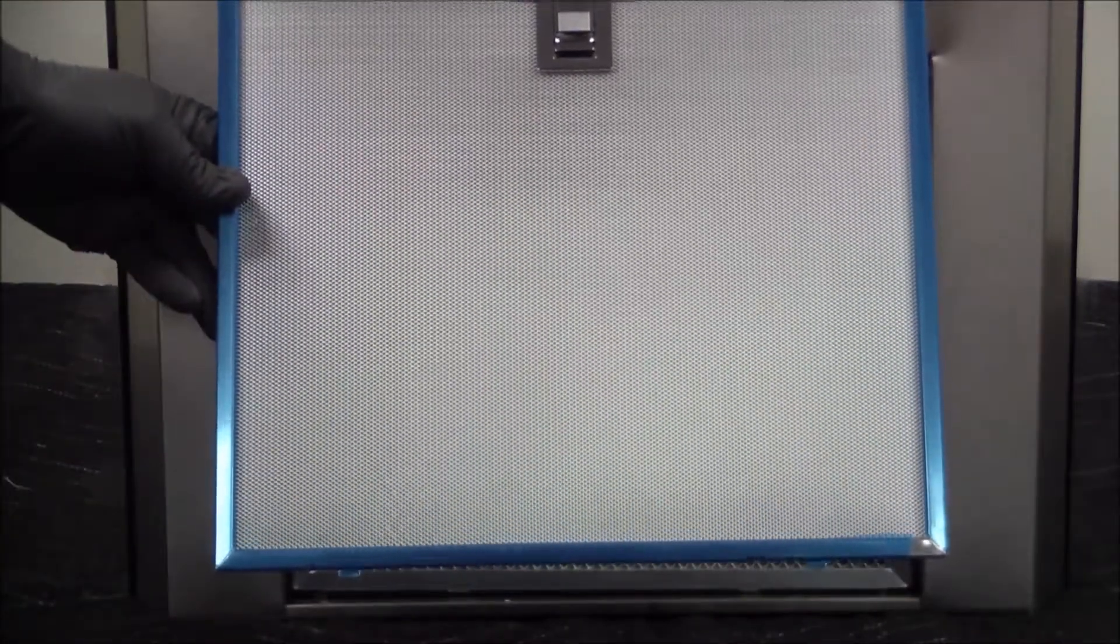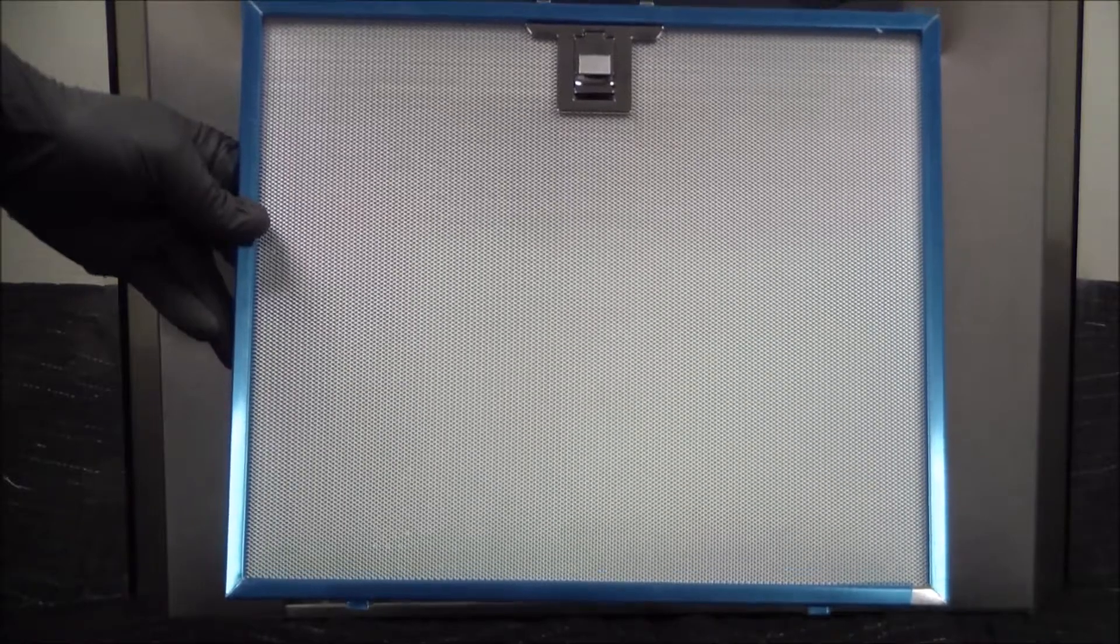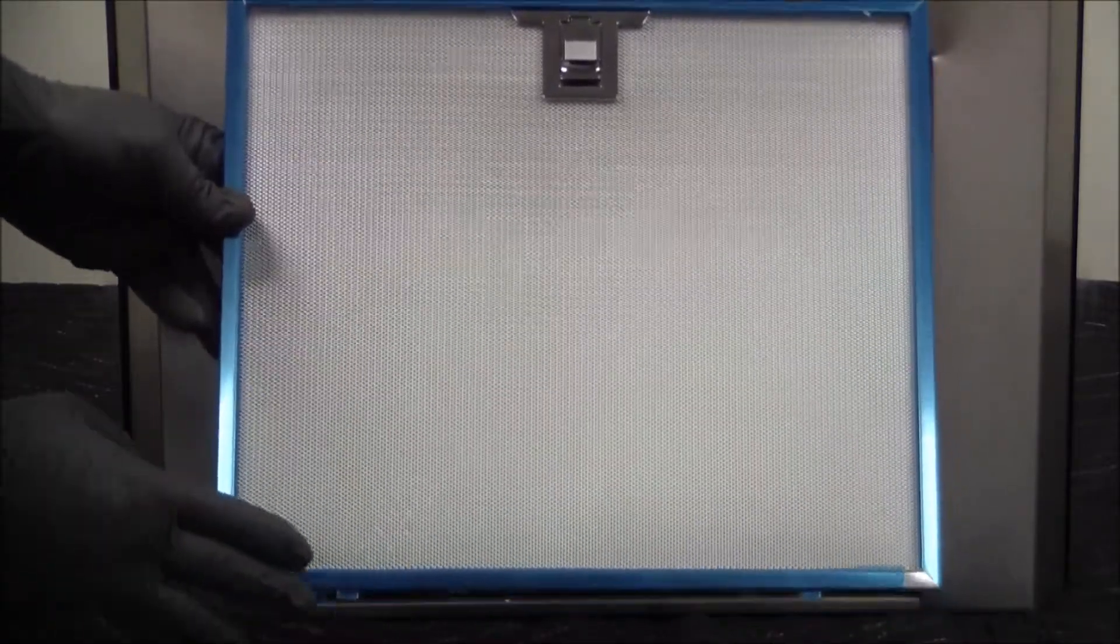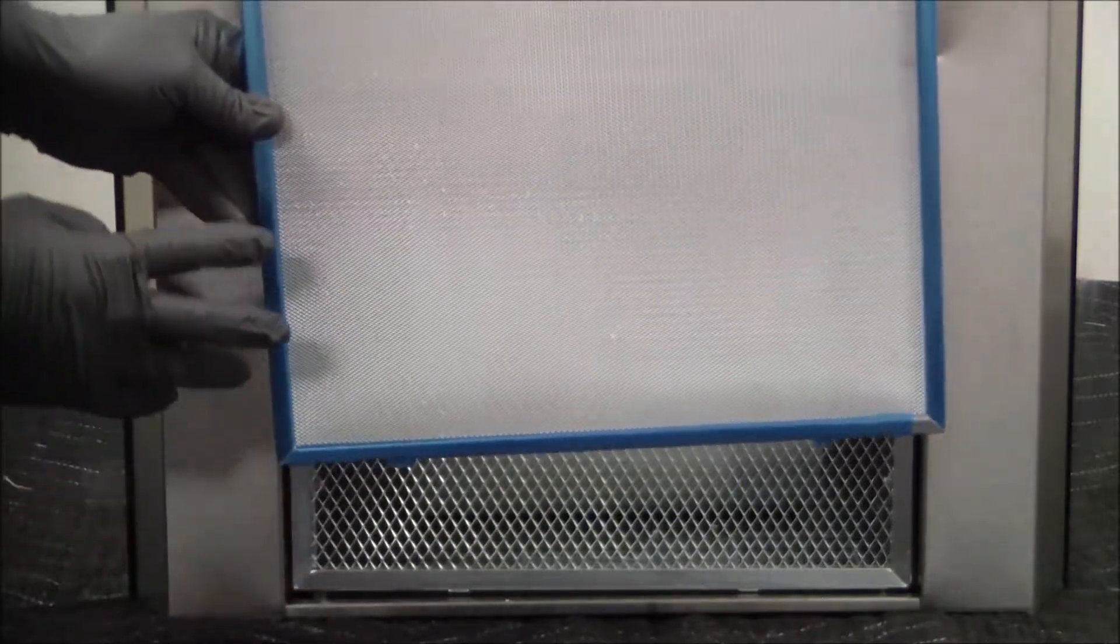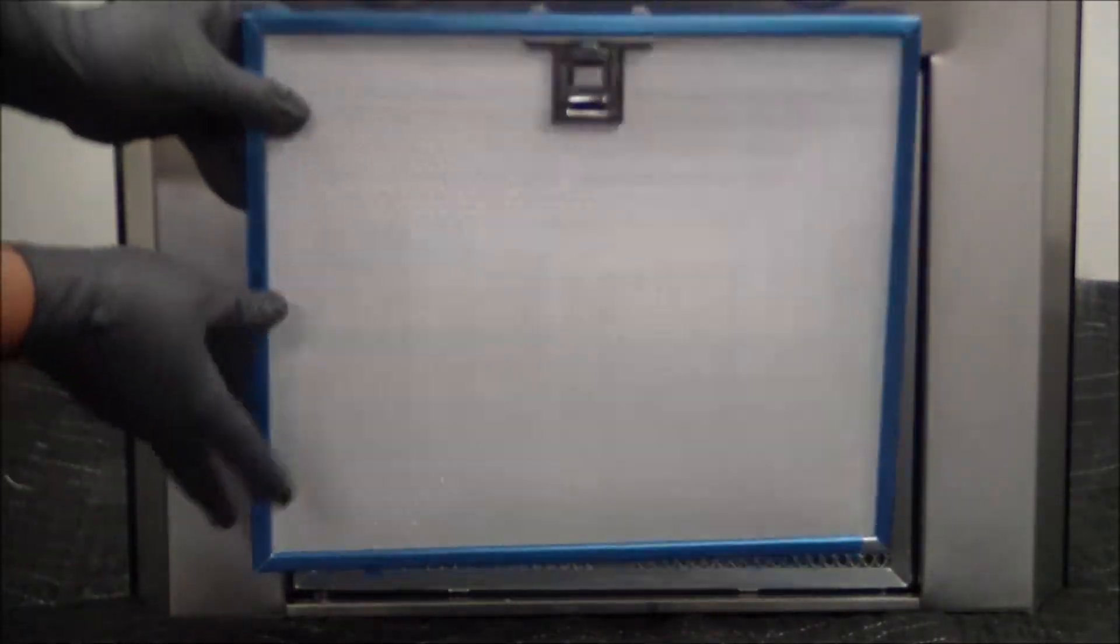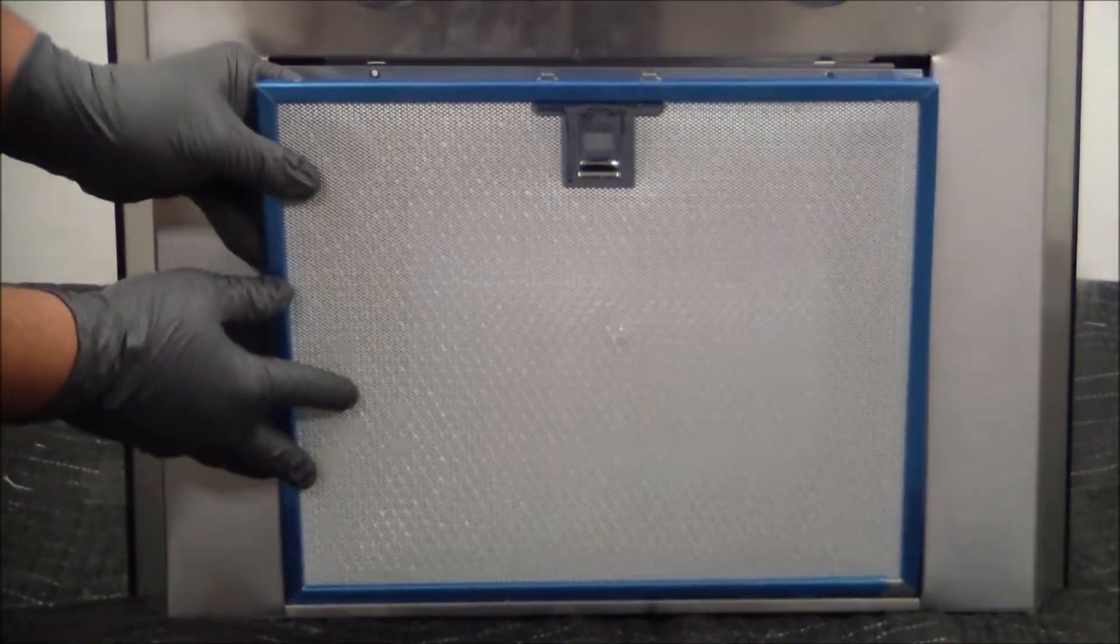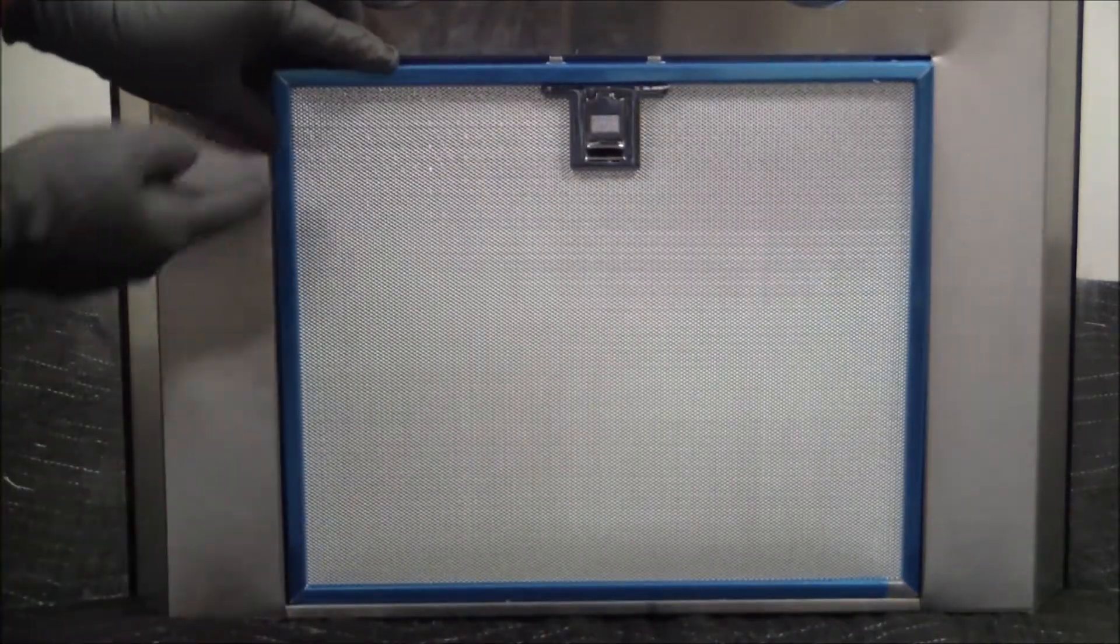Reinstallation of the filter, which also applies to the stainless steel version, is in reverse. We're going to go with the bottom and line it up to the openings that are on the back of the stainless steel body. Line them up once they're seated properly and the filter is sitting flush.